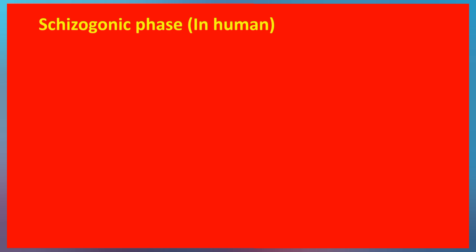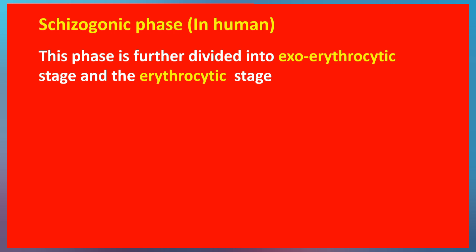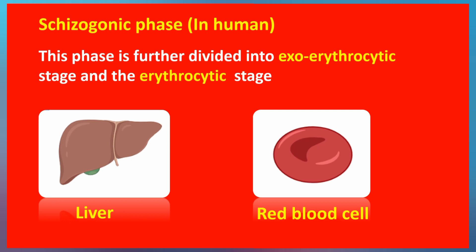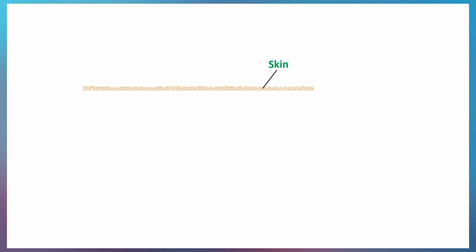The schizogonic phase takes place within the human host and is further divided into two main stages: the erythrocytic stage and the exo-erythrocytic stage. The exo-erythrocytic stage takes place within the liver, whereas the erythrocytic stage takes place within the red blood cells, the erythrocytes.